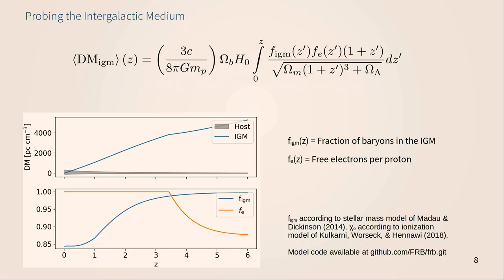The Macquart relation gives more details of the mean DM contribution from the intergalactic medium. You can see it depends on several cosmological parameters: the baryon fraction, matter mass fraction, dark energy or cosmological constant, and the Hubble constant. There are also astrophysical parameters, such as the evolving fraction of baryons in the IGM rather than collapsed in galaxies, and the number of free electrons per baryon.